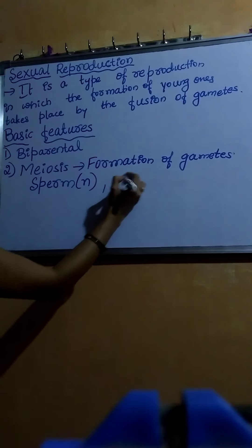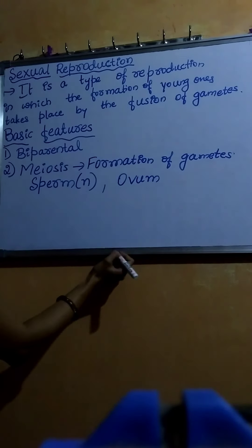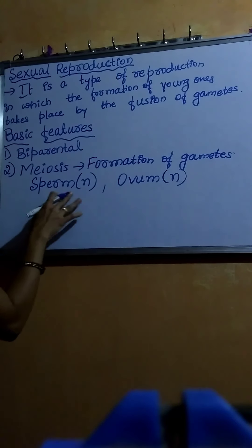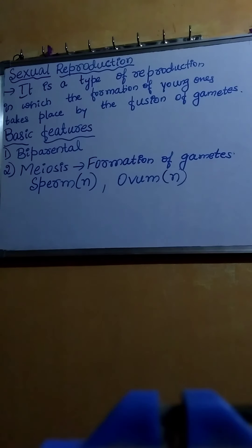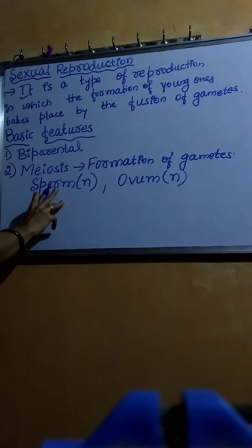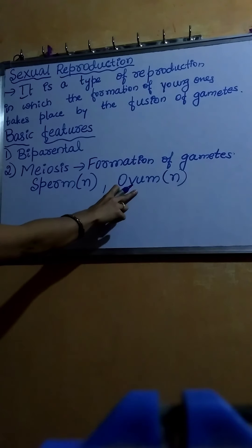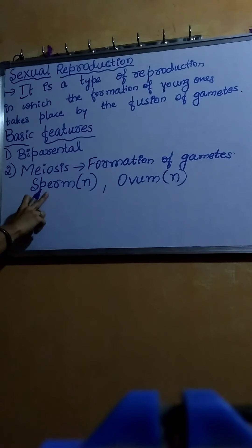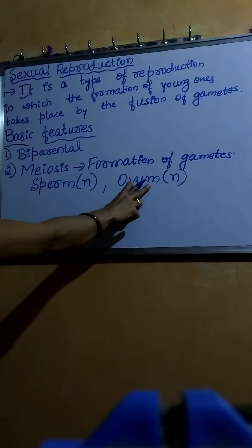The sperm is haploid. In case of females, the ovum or egg is the gamete, which is also haploid. Both sperm and ovum are produced by meiosis type of cell division. In some lower organisms, sex organs are not well developed. One gamete is motile — the sperm is the smaller, motile gamete, able to move — whereas the ovum is the larger, non-motile gamete.